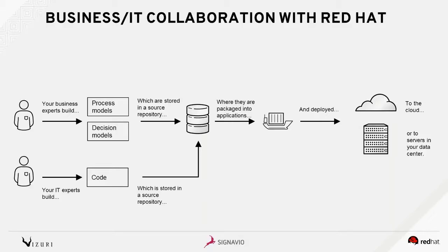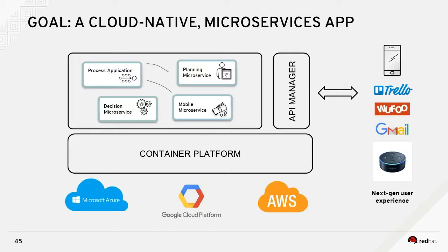Building an automated business application requires input from both traditional IT developers and business experts and business analysts — each responsible for different aspects of the new applications. IT developers will still be writing code required for applications to access data and interact with other systems. But the core of these applications is really business logic — process models and decision models produced with tools like Signavio — and our platforms allow business experts and IT to work together to create the source for these applications.